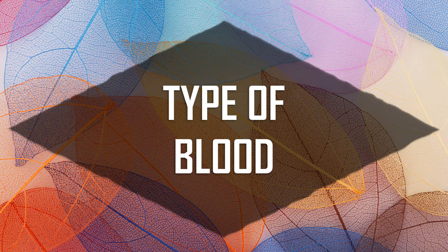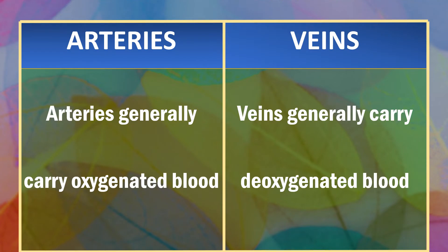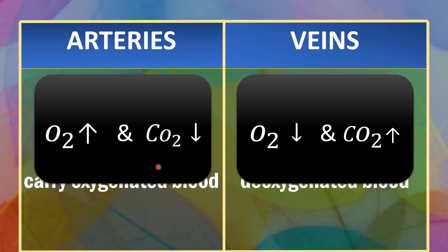Now, let's differentiate arteries and veins based on the type of blood flowing through them. Arteries generally carry oxygenated blood while veins carry deoxygenated blood. By oxygenated, we mean that the blood has a high quantity of oxygen and a lower quantity of carbon dioxide.